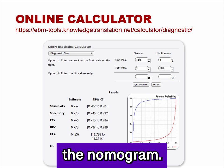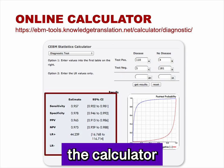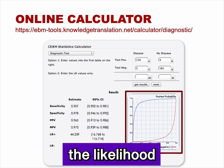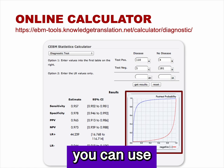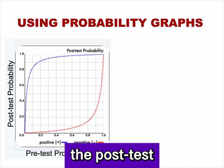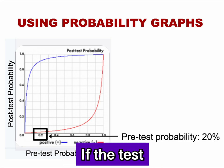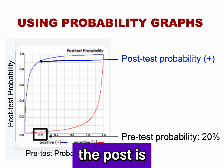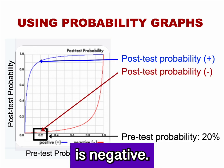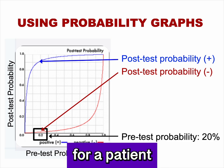There is an even easier way than using the nomogram: the Diagnostic Test Calculator on the Center for Evidence-Based Medicine website. After completing the 2x2 table, the calculator provides all test characteristics with 95% confidence intervals, and a graph representing the likelihood ratio of the test. For a 20% pretest probability, the blue line shows the posttest probability if the test is positive — in the low to mid-90s — and the red line shows the posttest probability if negative — less than 5%. This graph can be used for any pretest probability.